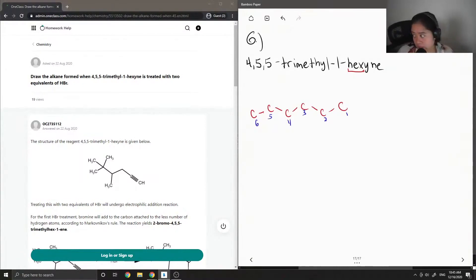We can see that on carbon-1, that is where our triple bond is, since it is 1-hexyne. Let's draw a triple bond on carbon-1, and there are three methyl groups. So there's methyl on carbon-4, and methyl on carbon-5.